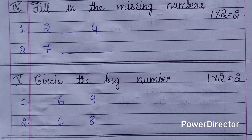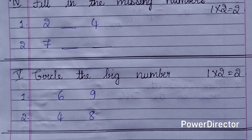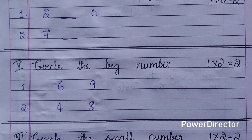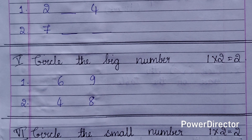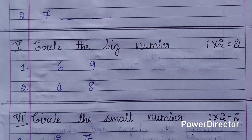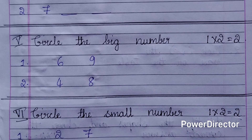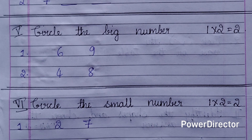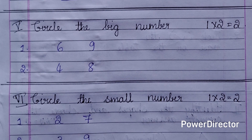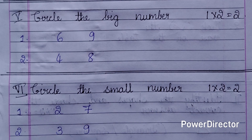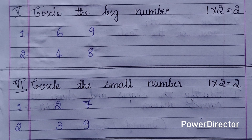Fifth main: circle the big number. Two numbers are given and the children have to circle the big number. Two questions are given, each question carries one mark, two marks for this main. Sixth main: circle the small number. Again, two questions are given, each question carries one mark, two marks for this main.